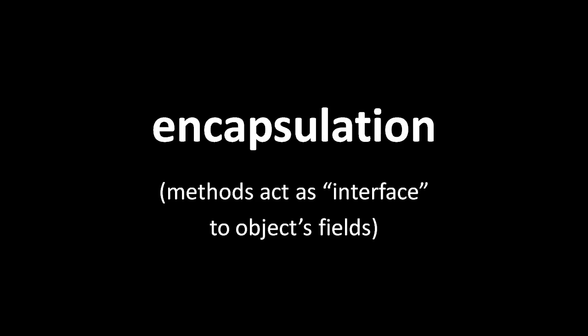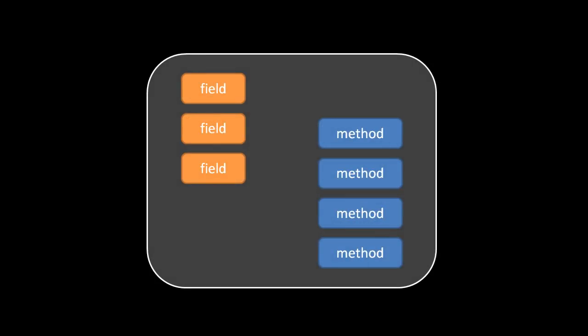The first principle of object-oriented programming is called encapsulation. The idea is simply that the fields of an object should only be read or written by methods of that instance's class. The number-of-lives field of a cat object, for example, should only be read and written by methods of the cat class — not by any other code. From outside the cat class, the only way to interact with a cat object's fields is by invoking methods of the cat class, and it is those methods which may directly read and write the fields.